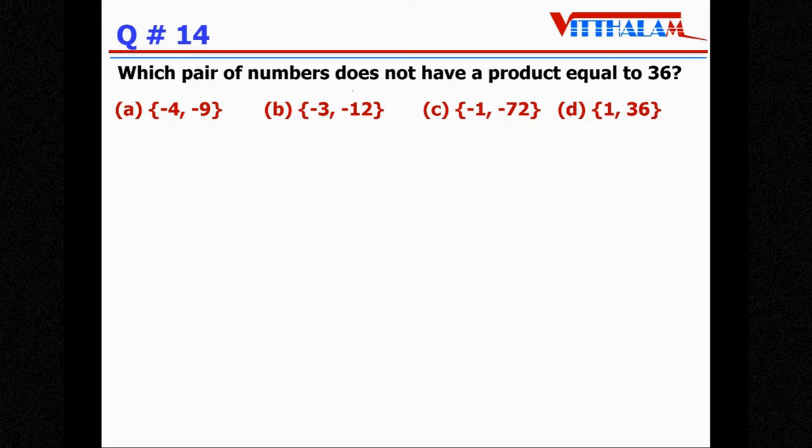Next, which pair of numbers does not have a product equal to 36? So let's see the options. Minus 4 minus 9, so both negative sign therefore the product has a positive sign so 36, so this equals 36 therefore this is not the answer.